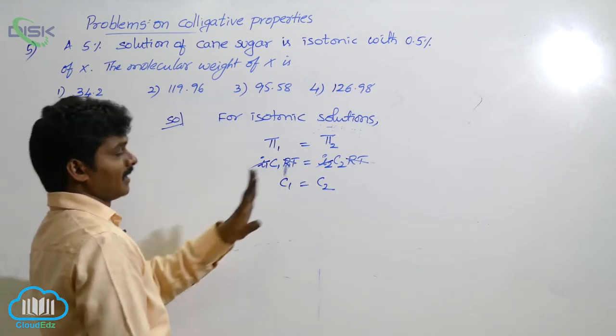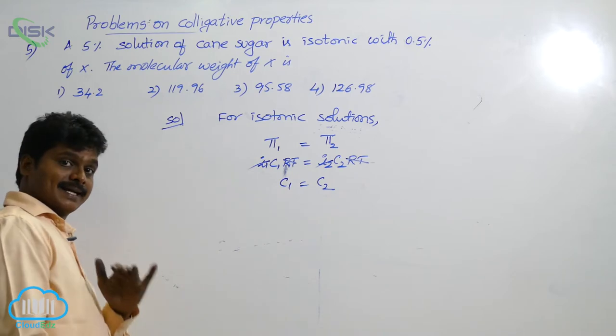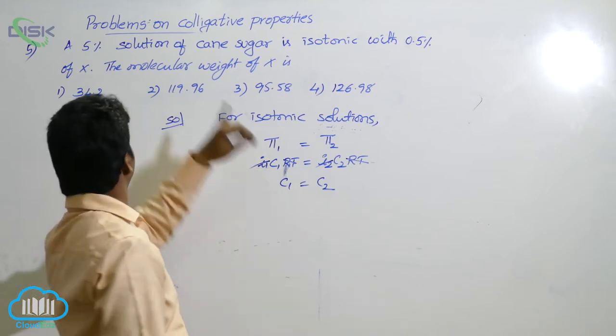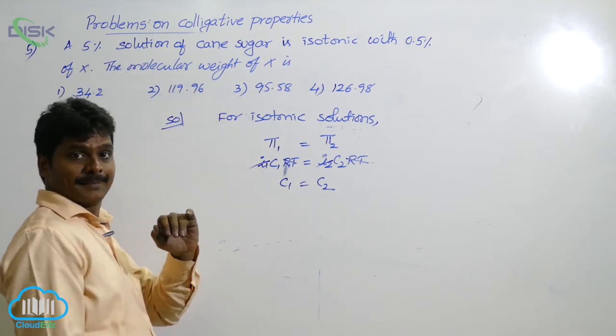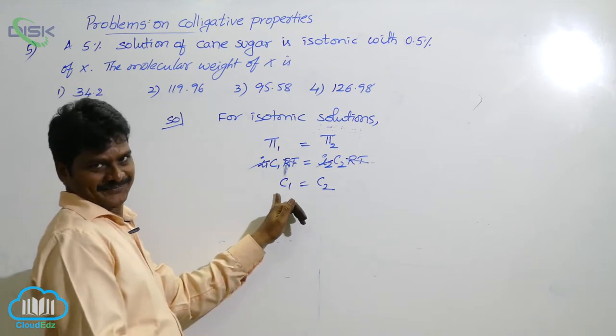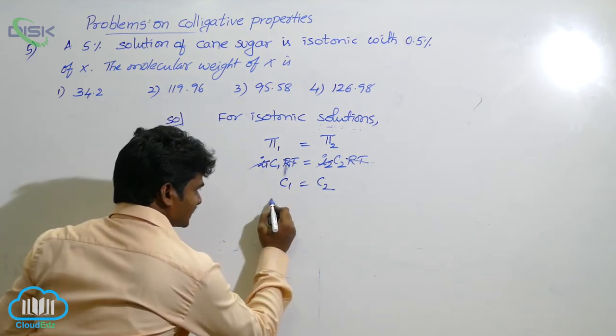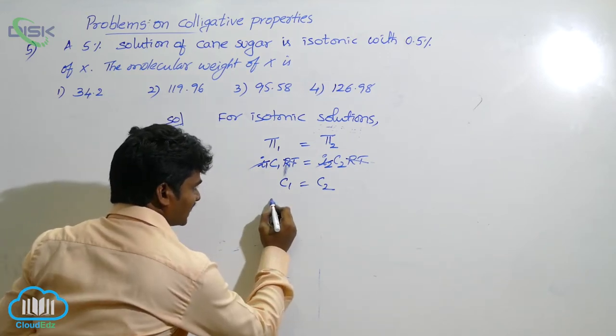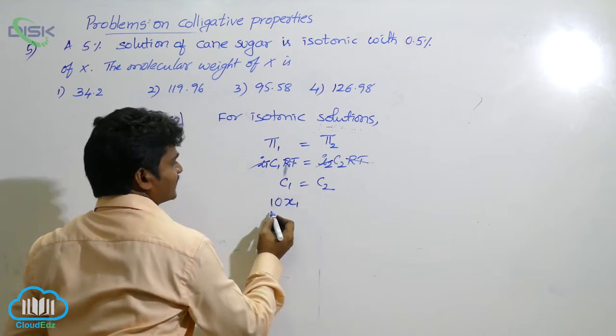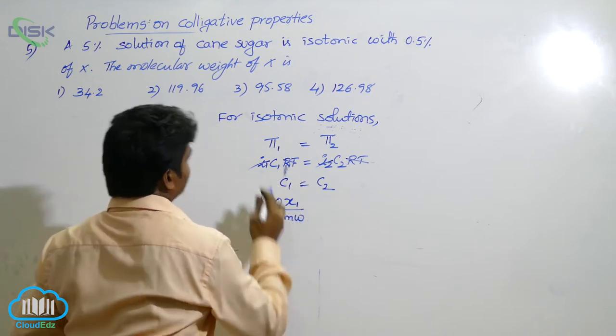C1, how to write? Percentage is given there. Consider that percentage because here molarity terms. That is why consider the given percentage as percentage W by V. If percentage W by V is given, what is the formula for molarity? If percentage W by V is given, the formula is 10 into given percentage by gram molecular weight of this first substance.